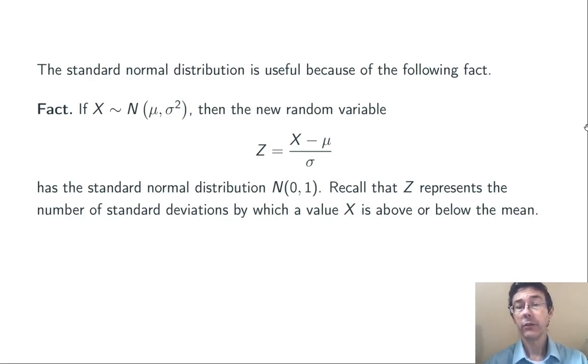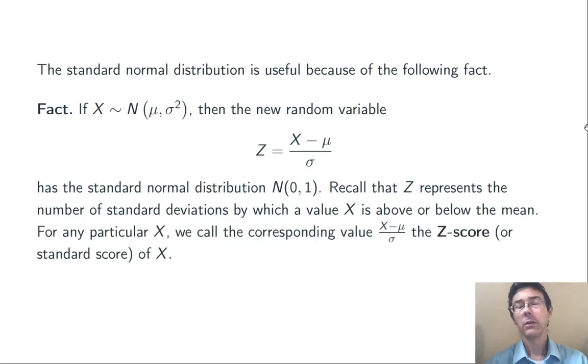Now, remembering our conversation about z-scores, z represents the number of standard deviations by which any value x is above or below the mean. Sometimes, we also call z-scores standard scores.